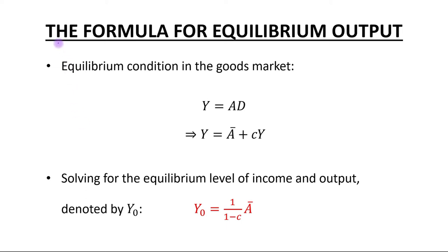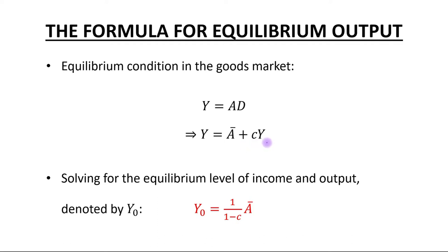Hello students. Today's topic is the formula for equilibrium output. The equilibrium condition in the goods market is Y equals AD, or Y equals a_bar plus MPC times Y.